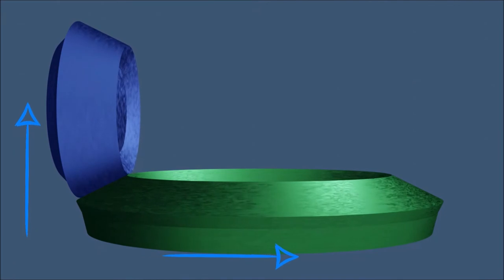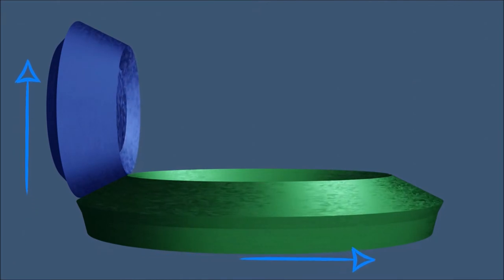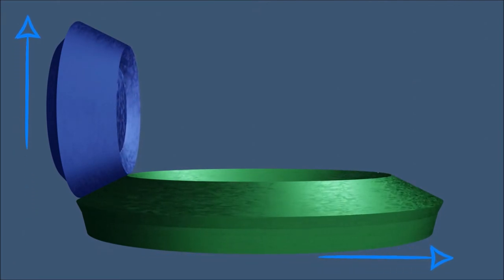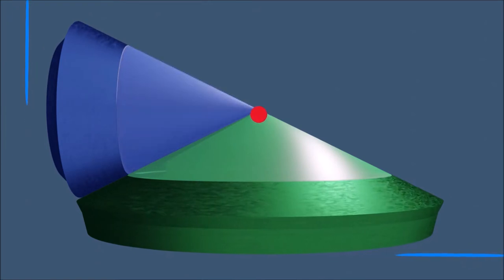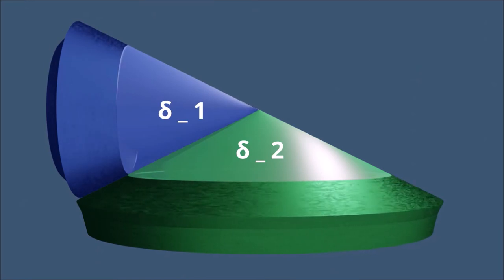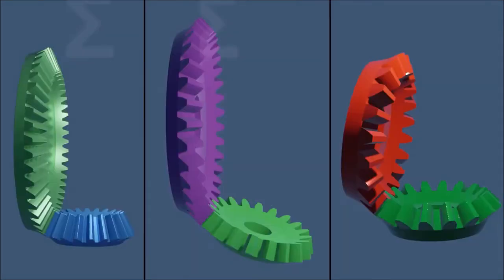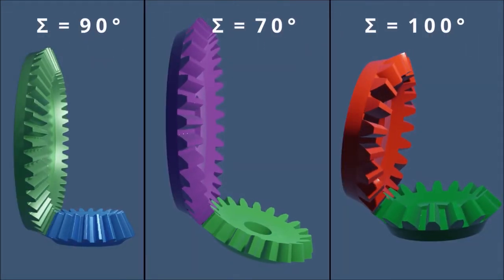Bevel gears have a form of truncated cones. The paired bevel gears roll on top of each other without sliding. The peripheral velocity at the contact point is the same for both gears. The cones meet at their specific angles delta 1 and delta 2.